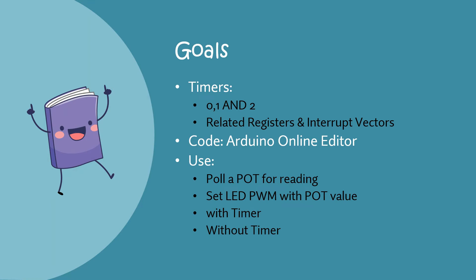The goal here is to understand the three timers in the Arduino Uno: Timer 0, 1, and 2. There are certain related registers and interrupt vectors which we shall study in detail. For coding I shall use the Arduino online editor. The final experiment we shall run is to use the timer to repeatedly get the analog value of a potentiometer, and using this analog value an LED PWM shall be set to a proportional value. I shall execute this first without a timer and then with a timer.